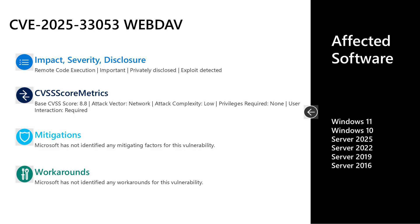The first CVE I'll talk to in today's video is CVE-2025-33053. This is an important remote code execution vulnerability in the Web Distributed Authoring and Versioning component, otherwise known as WebDAV. It has a CVSS base score of 8.8. This one was privately disclosed to Microsoft, but exploitation has been detected — so this is the one that hits the exploit-detected flag for the release. The attack vector is over the network, attack complexity is low, no privileges are required, but user interaction is required. There are no documented mitigations or workarounds. Affected software is all versions of Windows in mainstream support: Server 2016, 2019, 2022, and 2025, as well as Windows 10 and 11 on the desktop side.